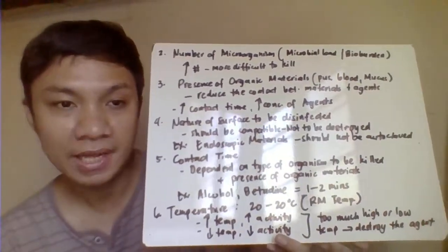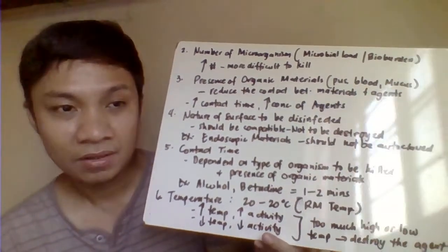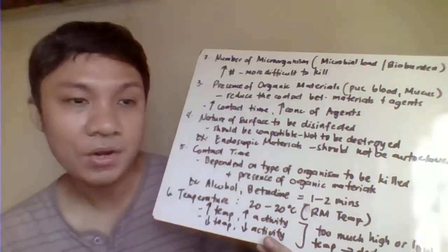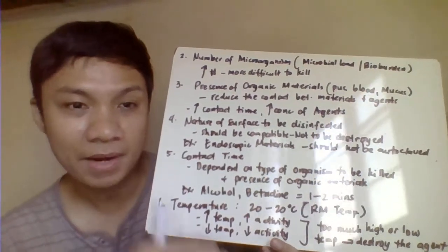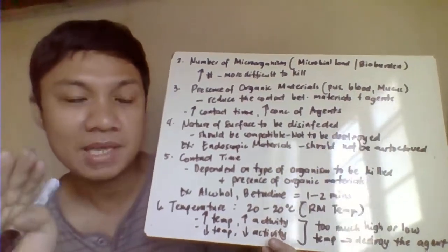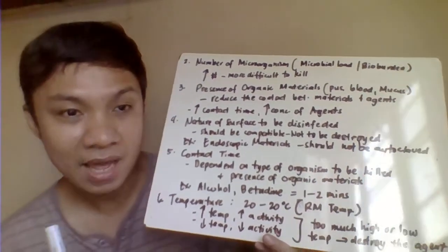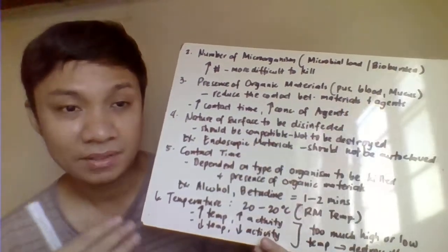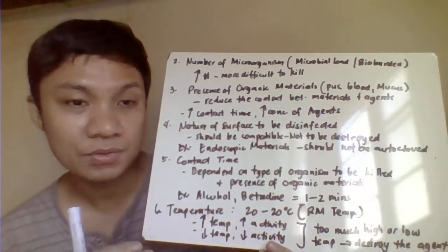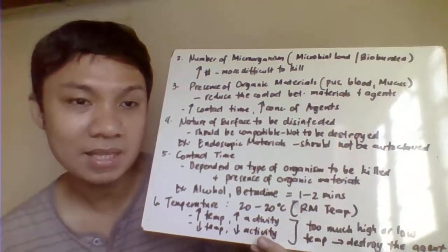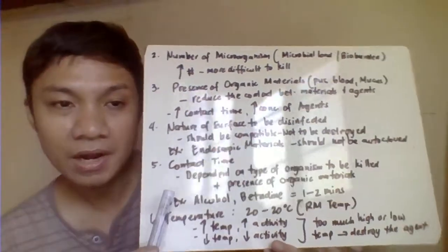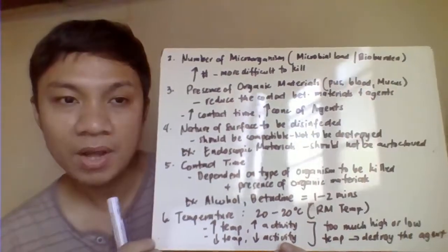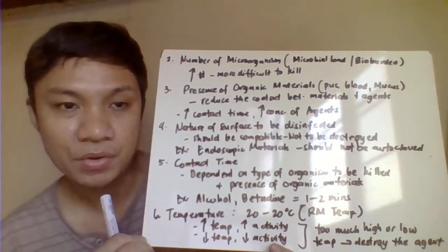Contact time is highly dependent on the number of microorganisms (bioburden), the type of microorganism — if they are prions or spores, sterilization takes longer — and the presence of organic materials, which also requires increased contact time. For example, alcohol and betadine typically require one to two minutes of contact time.